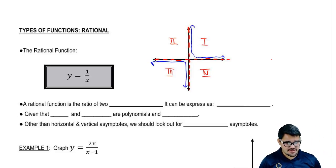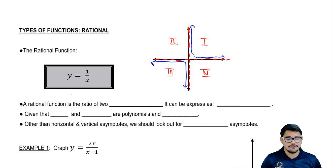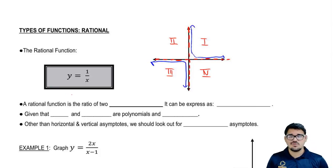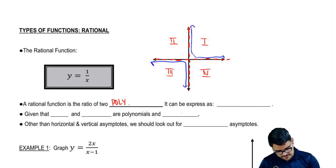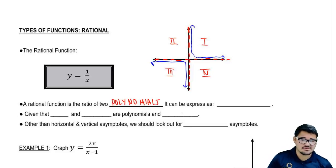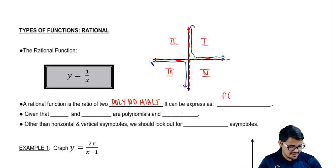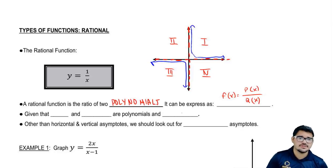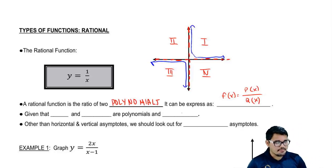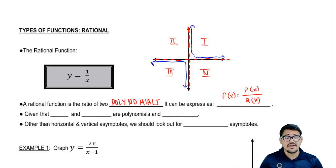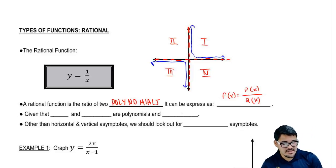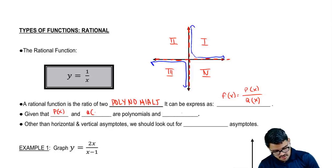That's pretty much how the rational function looks. A rational function is actually the ratio of two polynomials. So when we deal with rational functions, 1 over x is the ratio between two polynomials. It can be expressed as f of x equal to p of x over q of x. I'm going to use p and q because they follow each other. Given that p and q are polynomials, that's our definition.